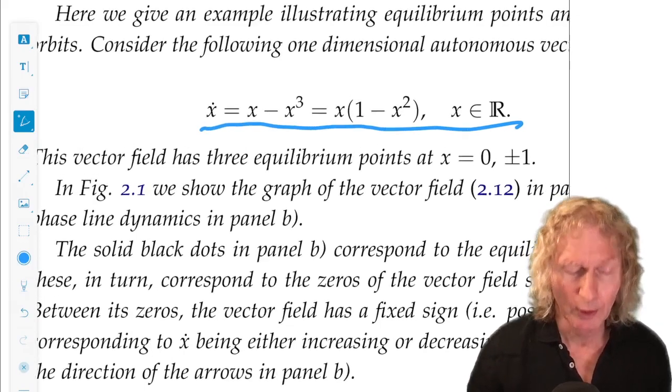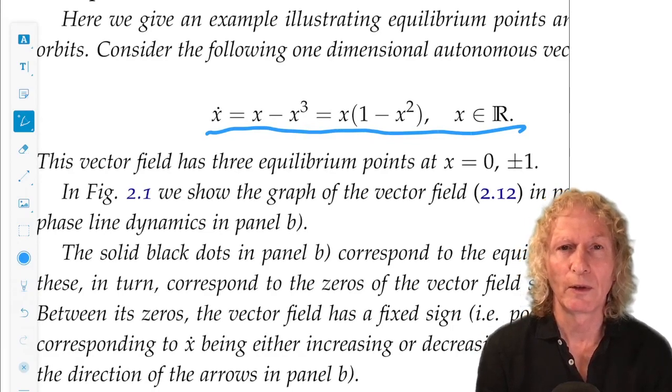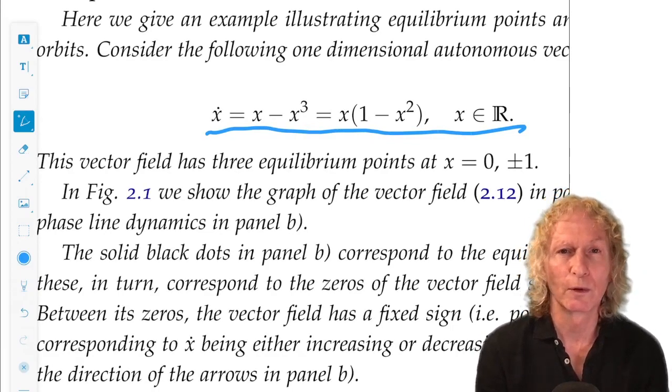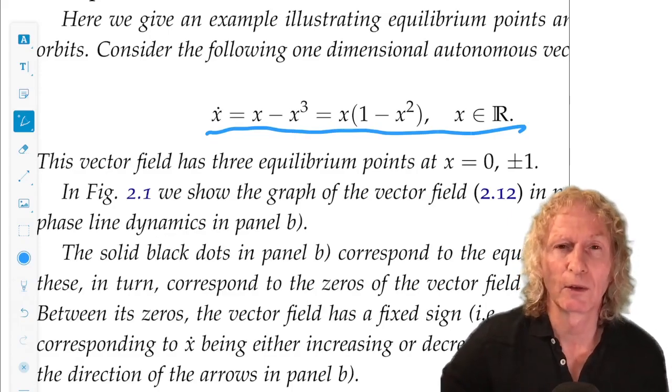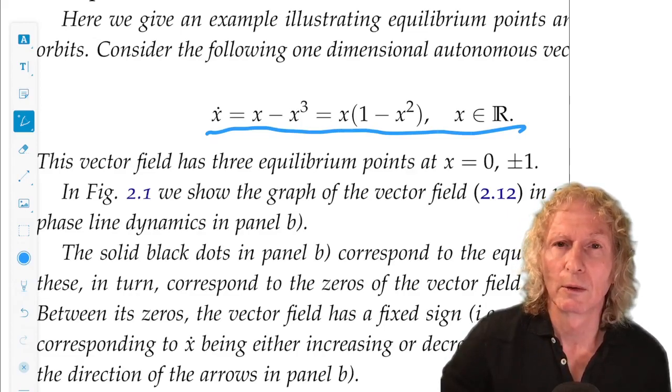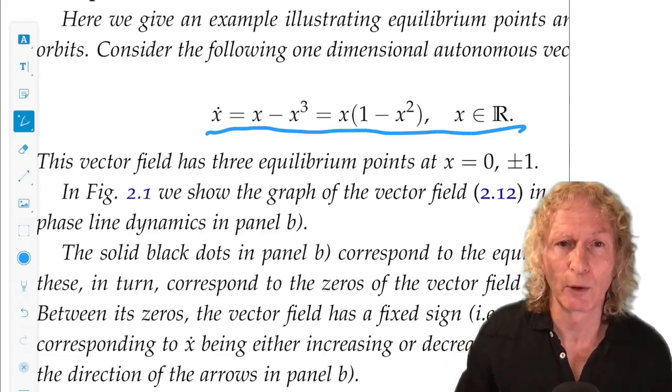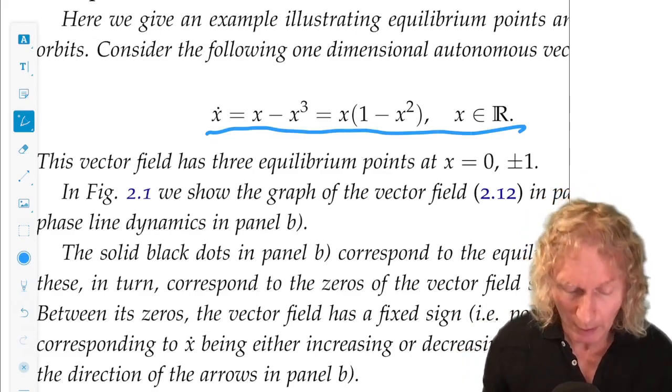So how do you start? For autonomous ODEs, what I always say is, do the easiest thing first. Find all the equilibrium points. x minus x cubed. Well, you can see what they are. There are three of them, x equals zero and x equal plus or minus one. And we can easily plot them in the phase plane.